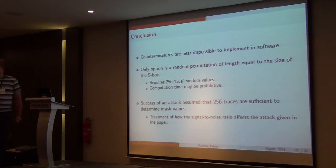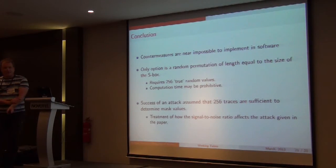So countermeasures, what we say is near impossible, we've sort of run out of ideas. So what I was saying about permutation being 256 bytes long to generate such a thing, you would need 256 true random values. Actually on a smart card, it's going to be very difficult to generate. So that computation time for that may be prohibitive. The success of an attack assumes that 256 traces are sufficient to achieve the attack. We have an evaluation of the signal to noise ratios in our paper for those that are interested. So that's it. Thank you for the talk.